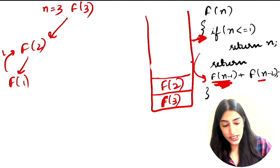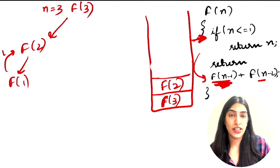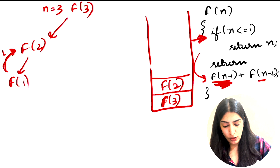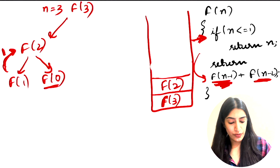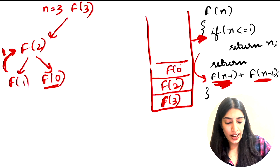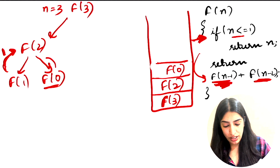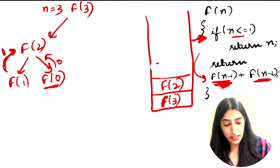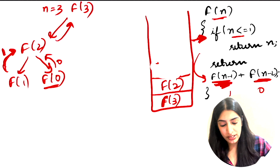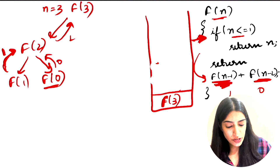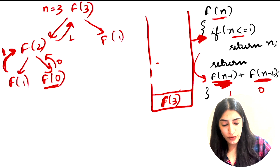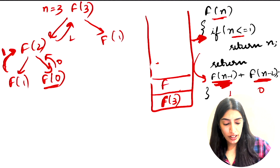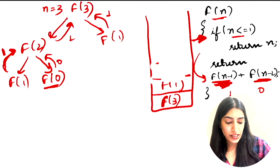Now n equals 1, the base condition is true, so we return 1. The memory for F(1) starts getting deallocated. The space taken was order of n. Then F(2) needs F(0) — we add F(0) to the stack, the condition is true, we return 0, and deallocate it. F(2) now has values 1 and 0, adds them, returns 1, and its memory is deallocated. Back in F(3), we have F(2) = 1. Now we calculate F(1), allocate it, return 1, deallocate. So F(3) = 1 + 1 = 2.